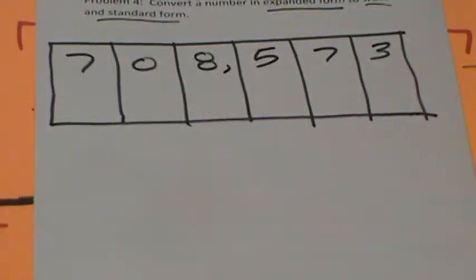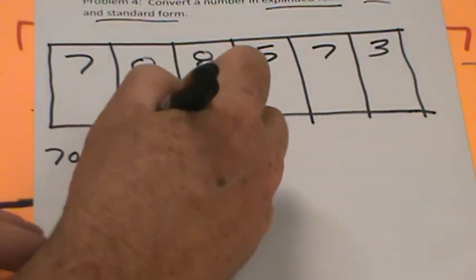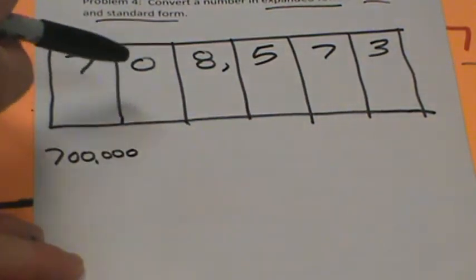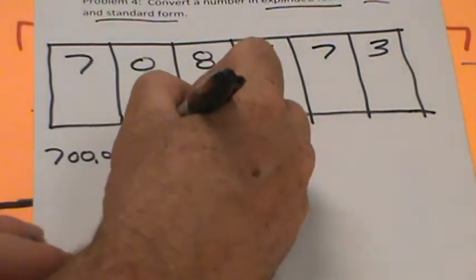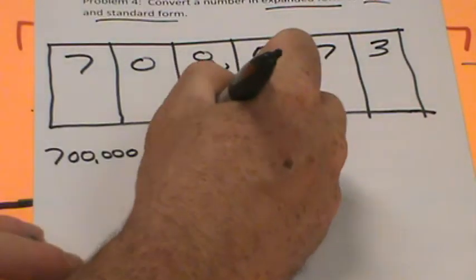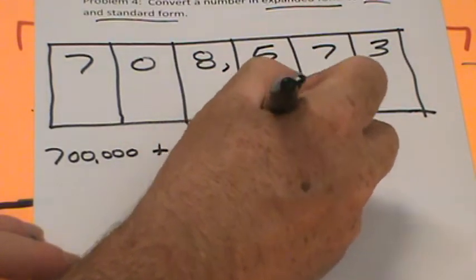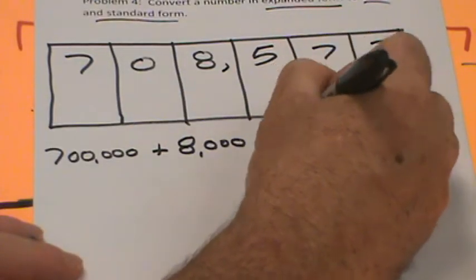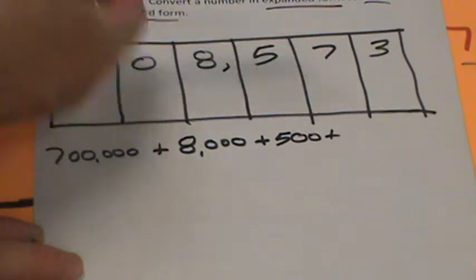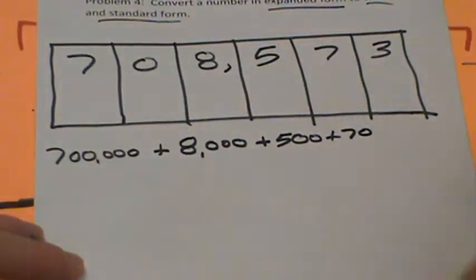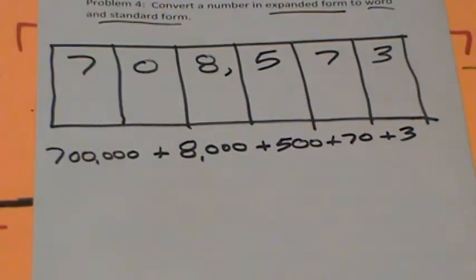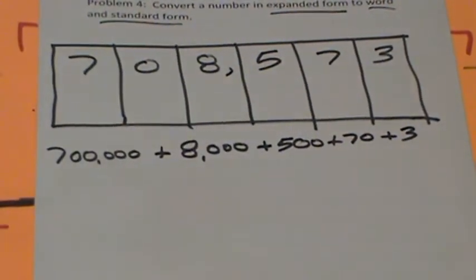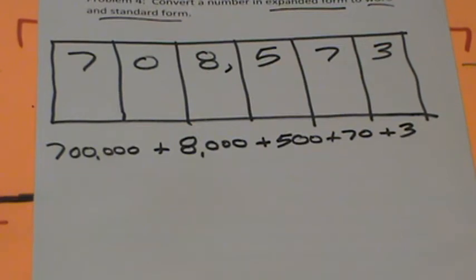We're converting from expanded form to word and standard form. Let's figure out standard form. How many hundred thousands? Seven. Zero ten-thousands. How many thousands? Eight. How many hundreds? Five. How many tens? Seven — seven times ten is seventy. How many ones? Three. So now we have this in expanded form and we're going to write it in word form and standard form.